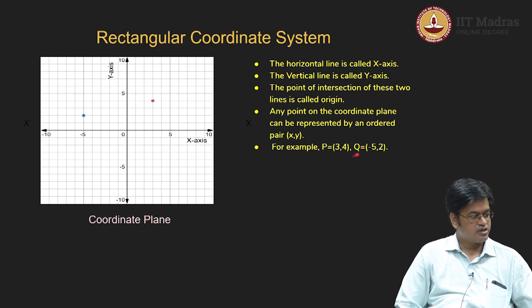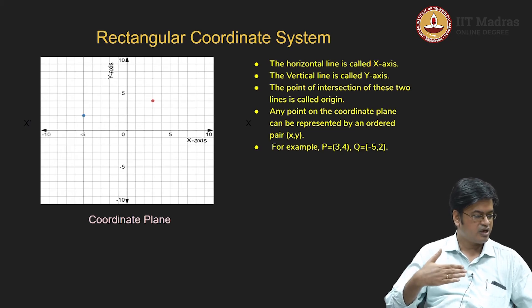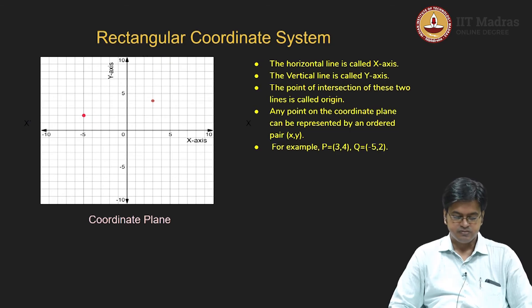Suppose you are given another point which is minus 5 comma 2. Then the x-coordinate is negative, meaning I have to go to the left of the vertical line. I have to travel 5 units distance, which is minus 5, and on the positive side of the y-axis — the upper half divided by the x-axis — I have to travel two units, which gives me the point minus 5 comma 2. This is how we can uniquely describe points using the coordinate plane.